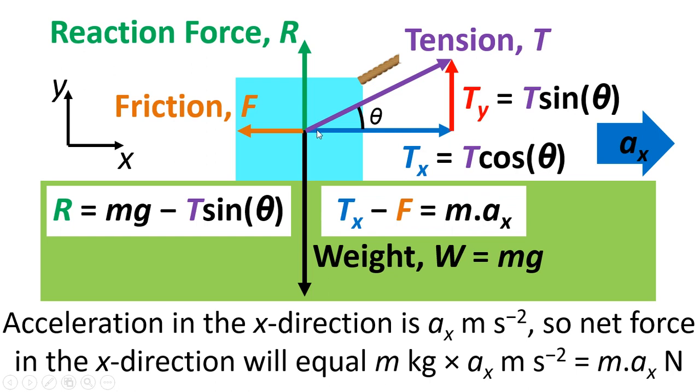So we've got the tension on the rope pulling in this direction. And then we've got the friction pulling back in that direction. So Tx minus F will be m ax. And we know that F equals mu R. So instead of writing F we can write mu R. And instead of writing Tx we can write T cos theta.